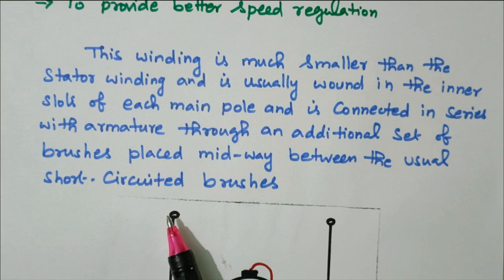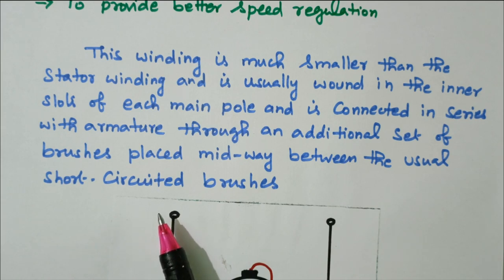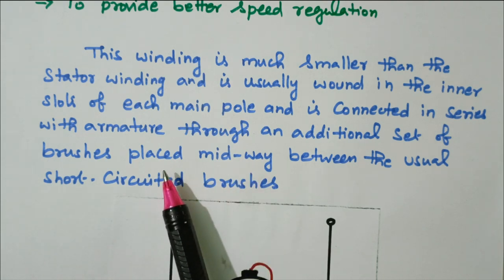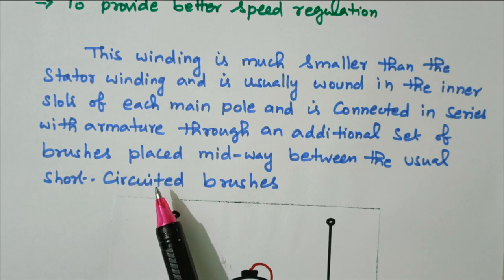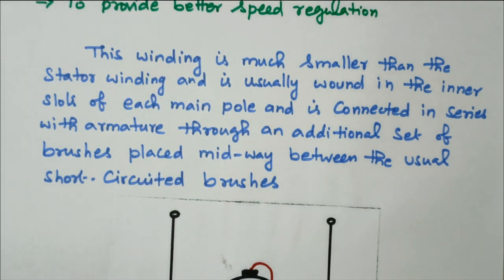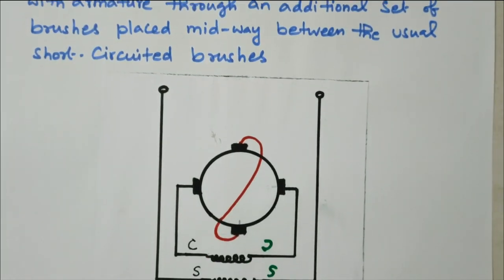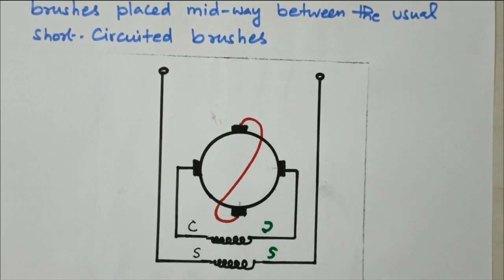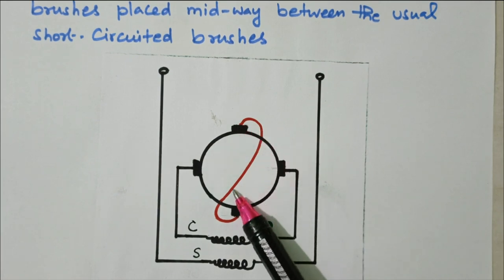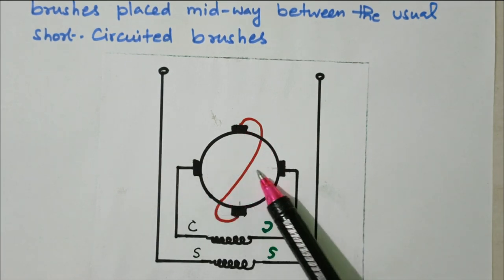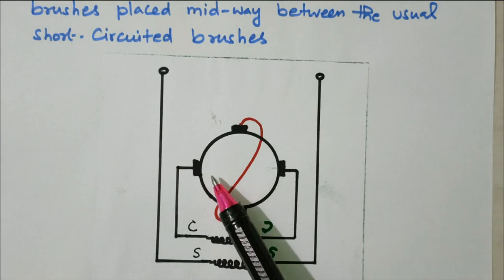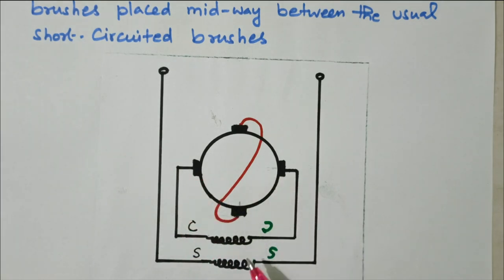The normal brushes are oriented in one direction, approximately perpendicular to a second set. Midway between these, the compensating winding is connected, while the other two brushes are short-circuited. This arrangement — with the compensating winding connected at the midway brush set — provides better power factor and speed regulation.